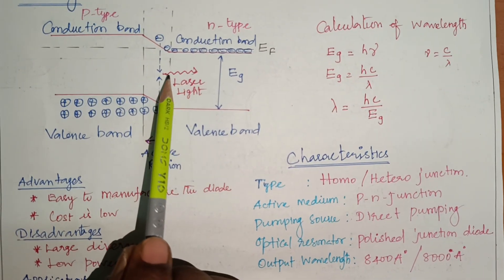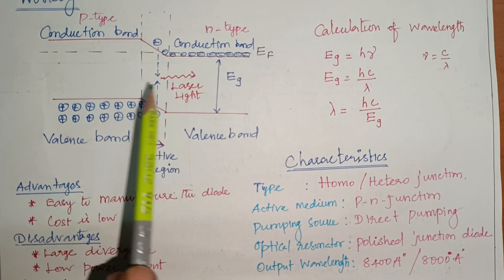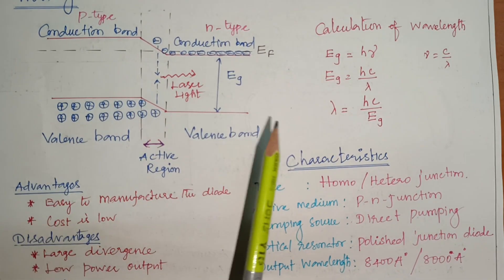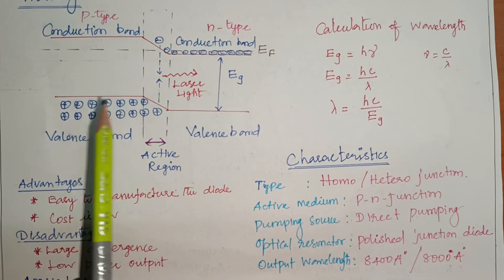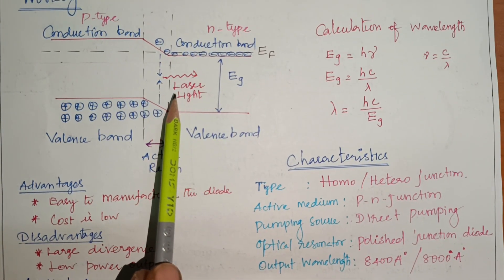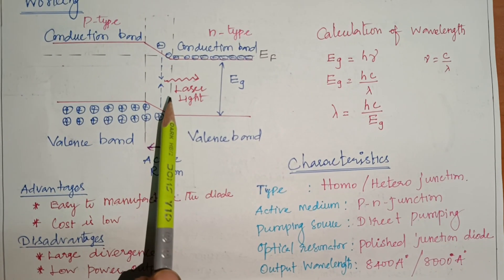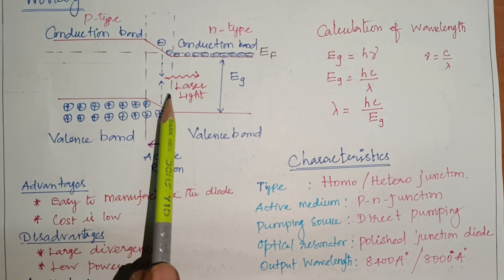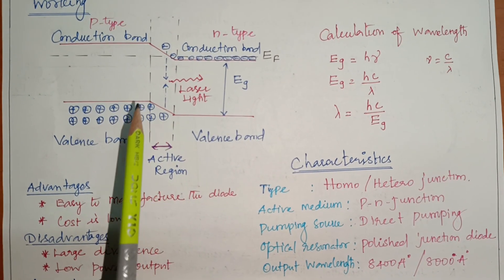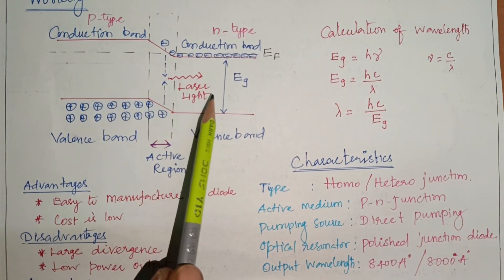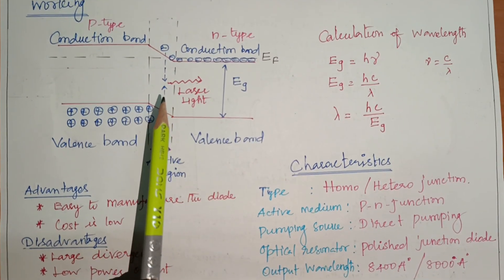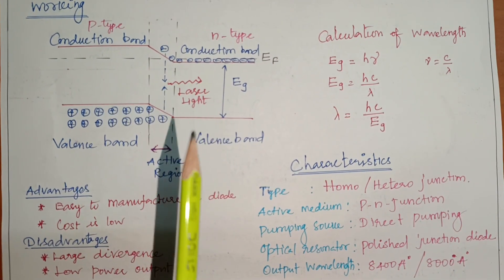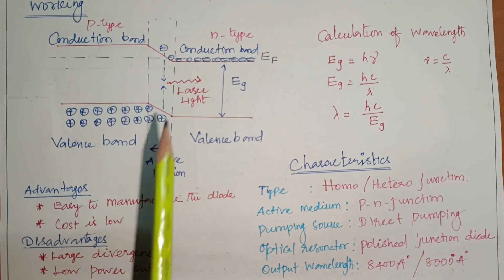The light produced travels back and forth through the p-n junction. When sufficient energy is achieved, laser is produced through the p-n junction.